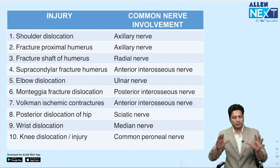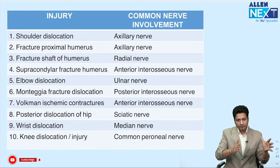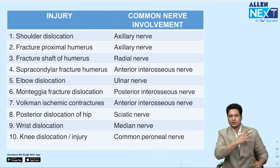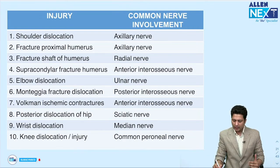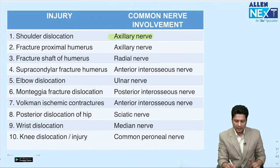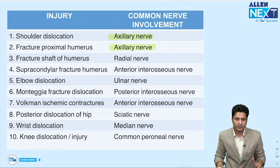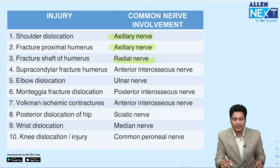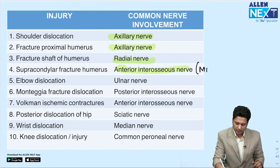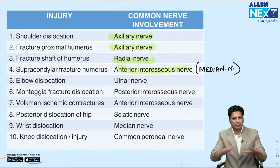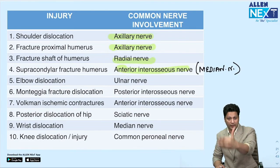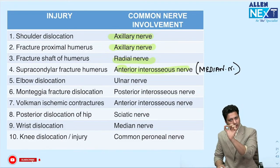Fractures and associated nerve injuries: shoulder dislocation or proximal humerus fracture — axillary nerve. Mid-shaft humerus fracture (middle one-third) — radial nerve. Supracondylar fracture of the humerus — anterior interosseous branch of the median nerve (not ulnar nerve, which is a common mistake).